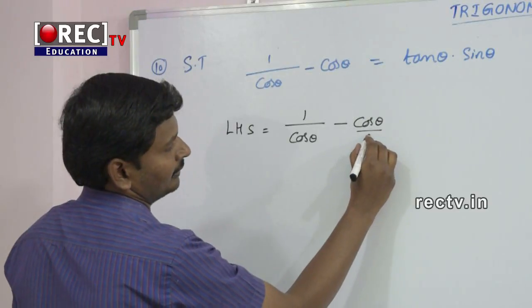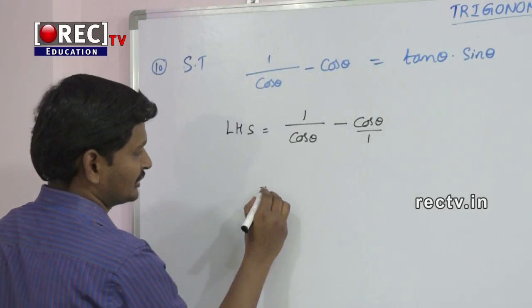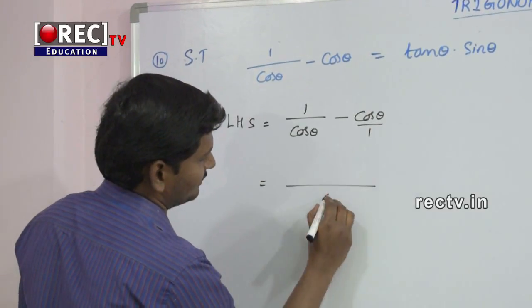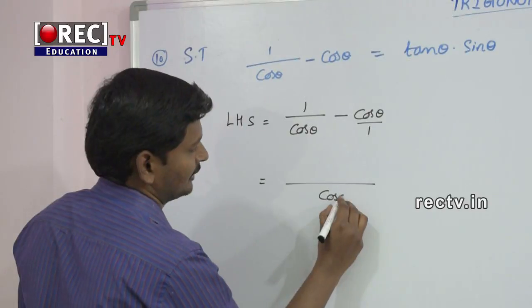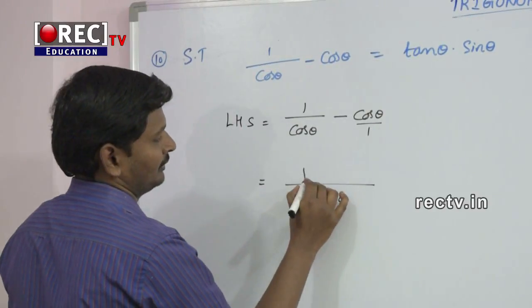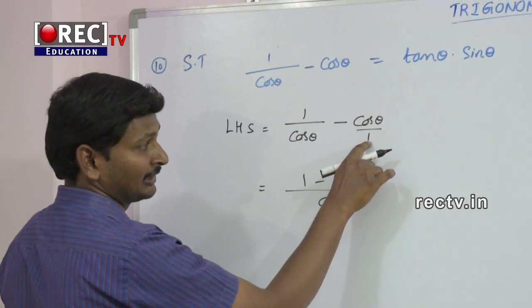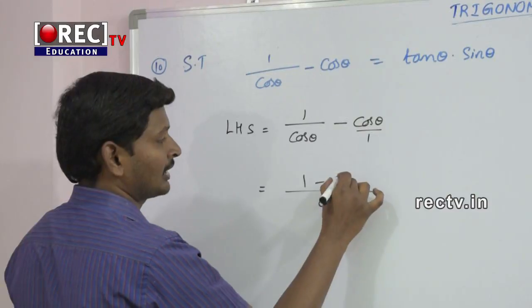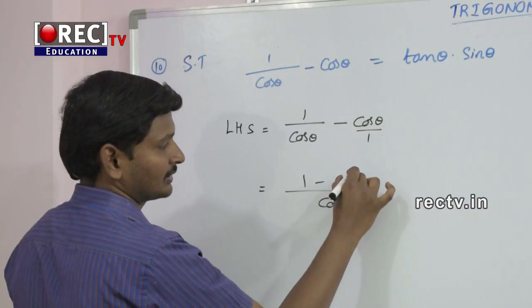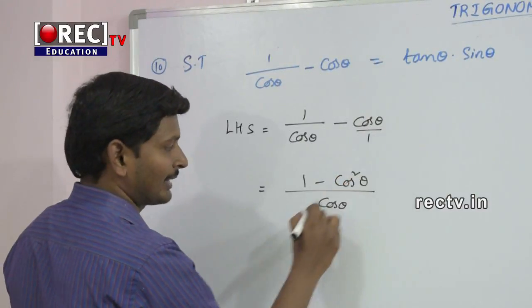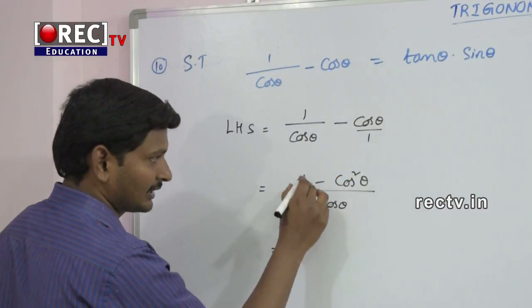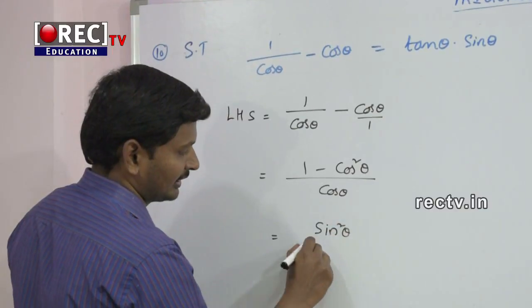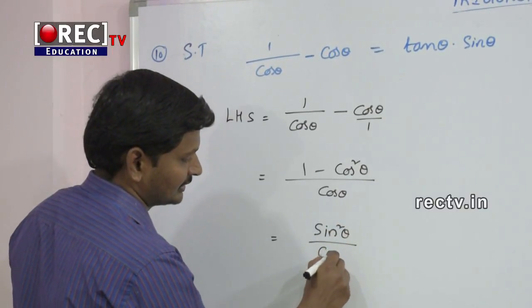Take LCM for 1 and cos theta, which is cos theta. There is only one denominator of 1, so we get cos theta into cos theta, that is cos squared theta. So we have 1 minus cos squared theta in the numerator.